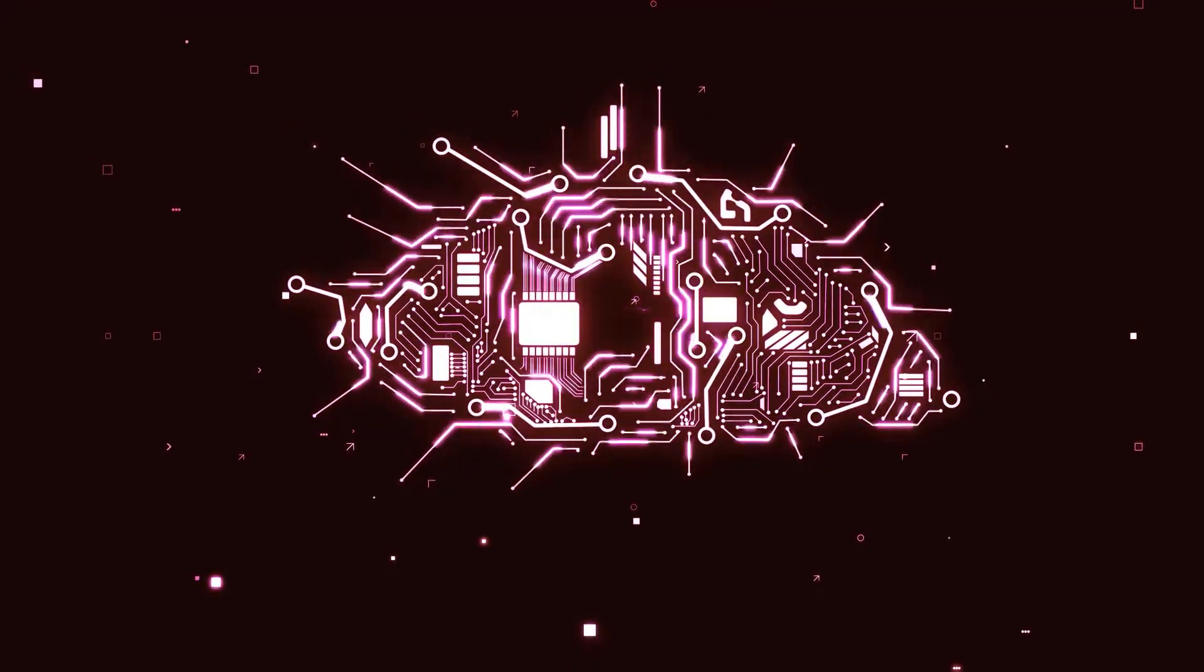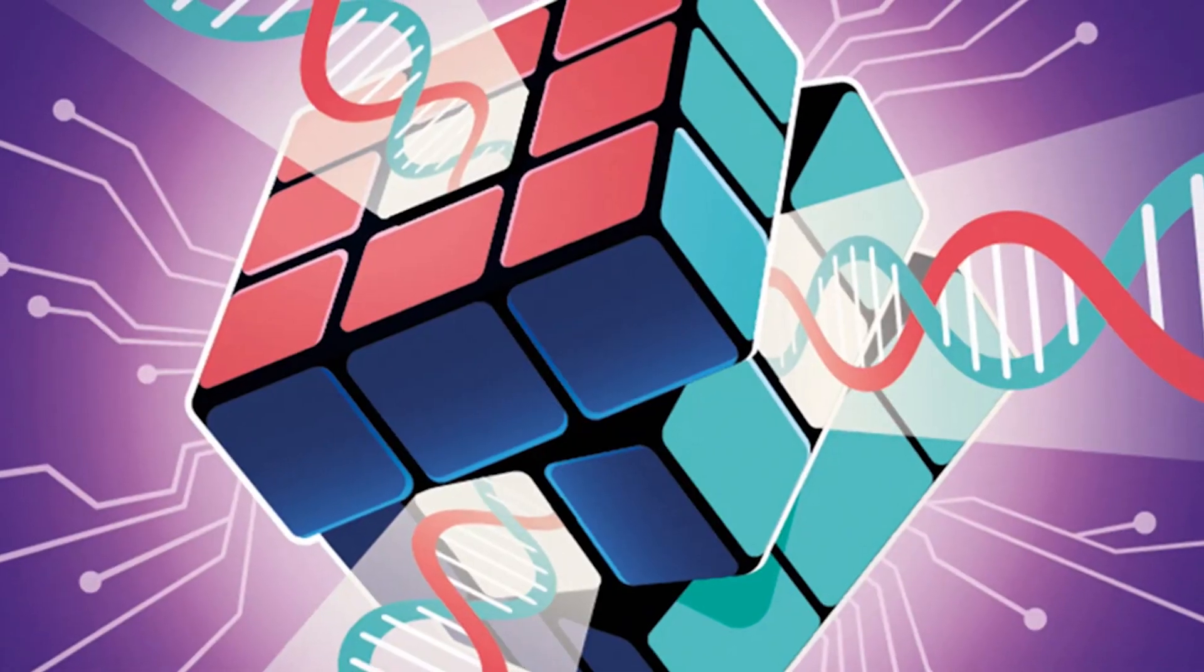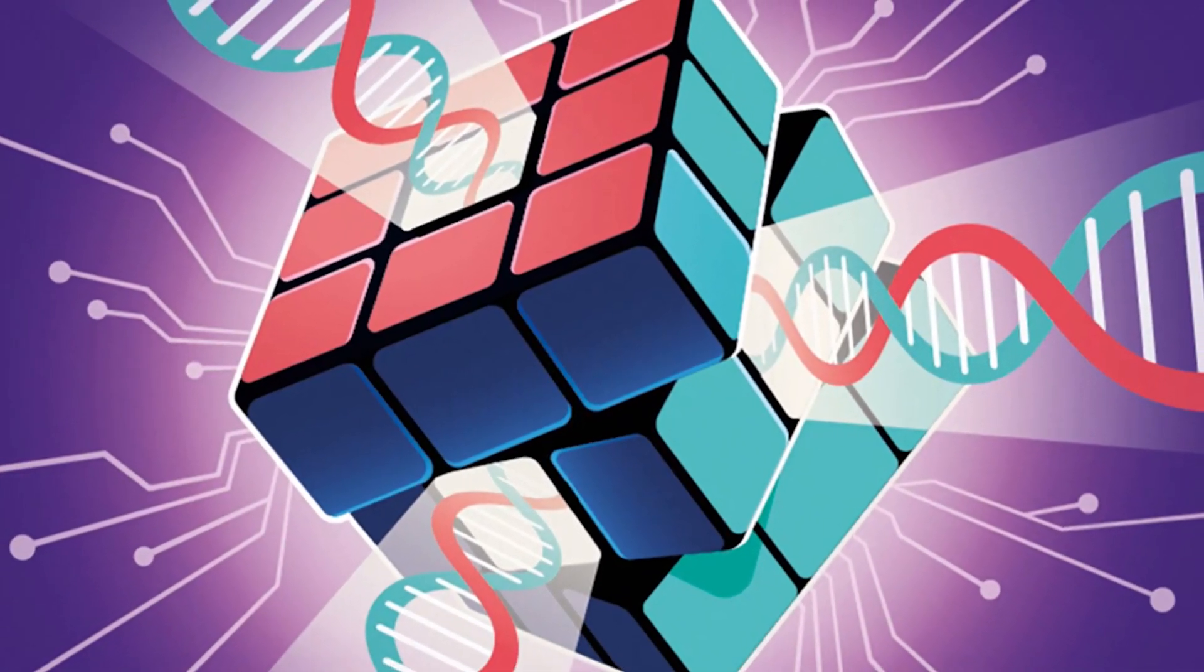Next is superposition. Qubits can be in a mix of one and zero at once, which is called superposition. This is like having many puzzle pieces in different places all at the same time. It helps us solve tough problems way faster.